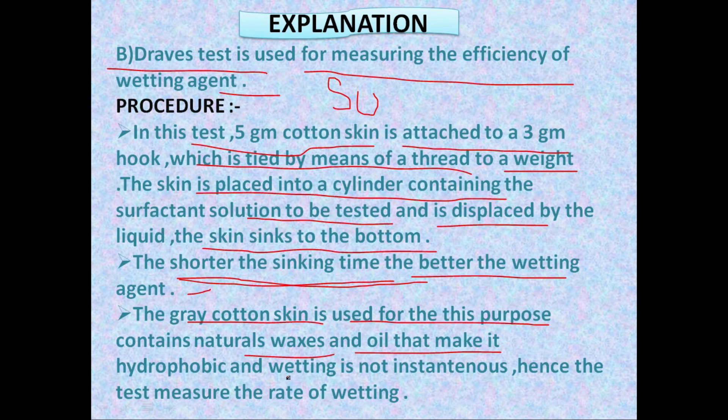The grey cotton skin used for this test contains natural waxes and oils that make it hydrophobic, and wetting is not instantaneous — hence the test measures the rate of wetting. The drape test is used for measuring the efficiency of wetting agents. This question appears in NIPER and GPAT exams, so try to note down the procedure.